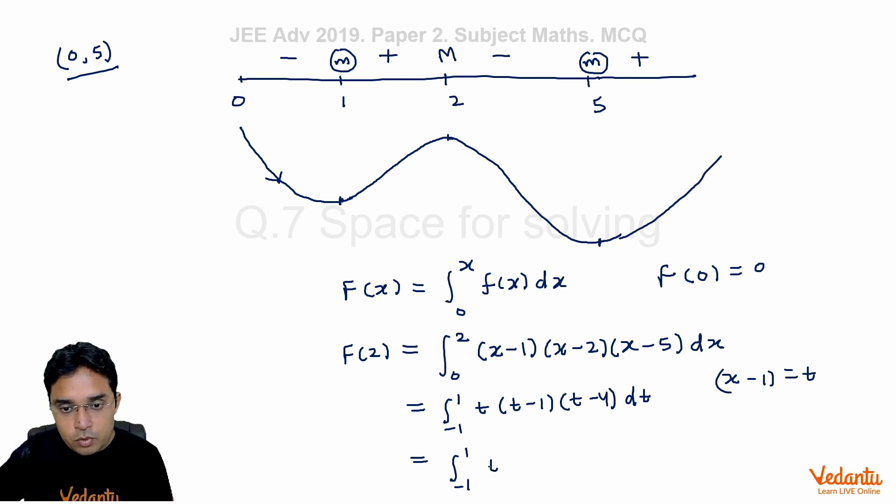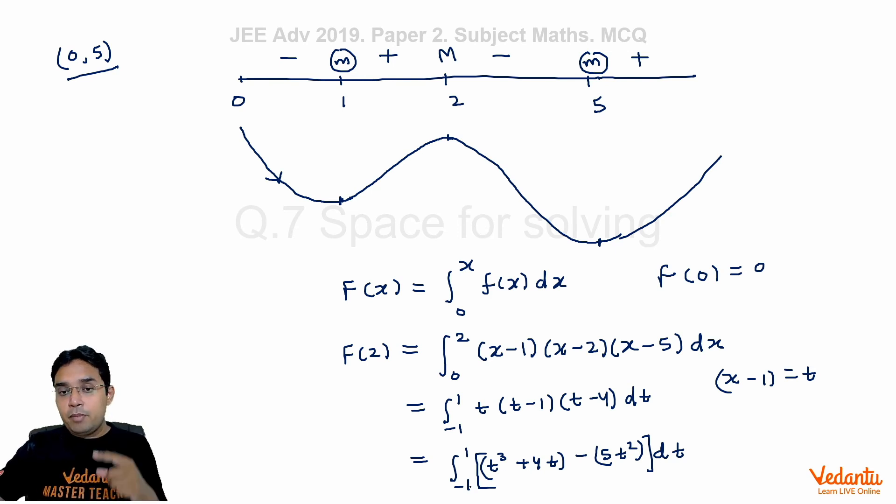Why I have written them like this? You can see this first bracket represents an odd function. So for limits from -1 to 1, this integral will be directly zero.